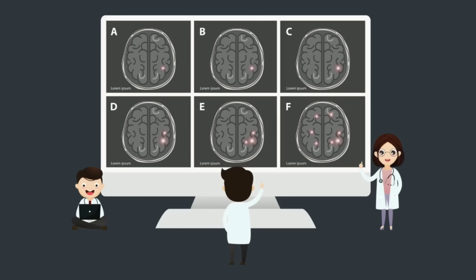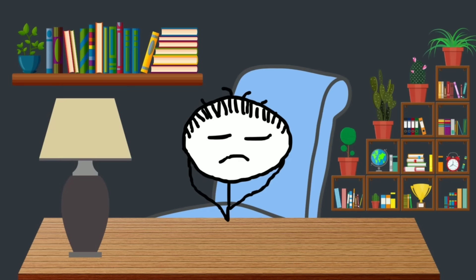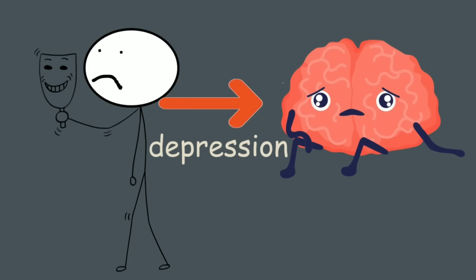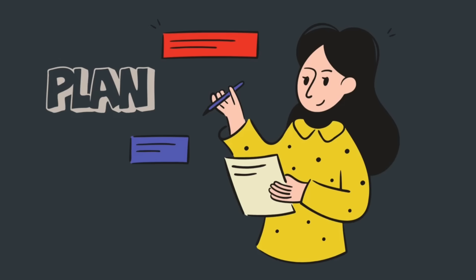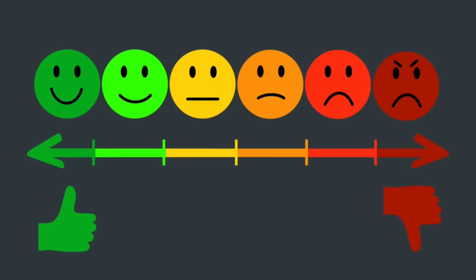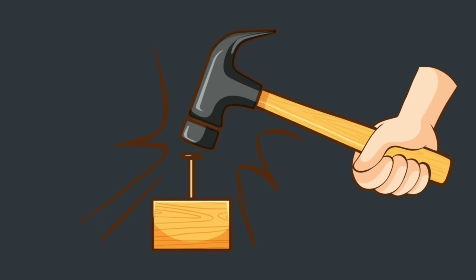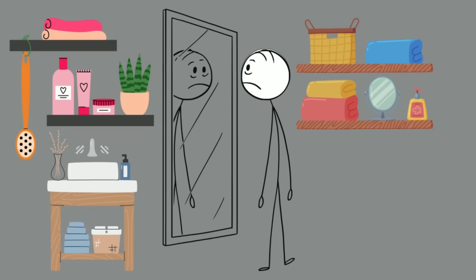Brain scans show reduced volume and connectivity in people who've been socially isolated for extended periods. It's the same kind of deterioration we see in depression and even early Alzheimer's. But it doesn't stop there. The prefrontal cortex, which helps you plan, make decisions, and regulate your emotions, also takes a hit.